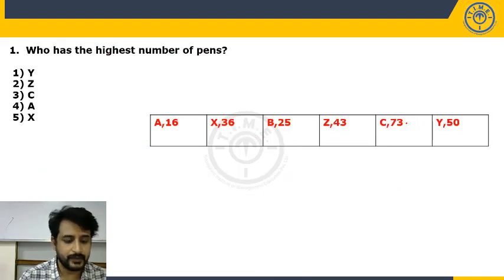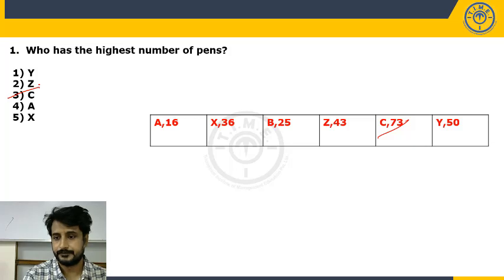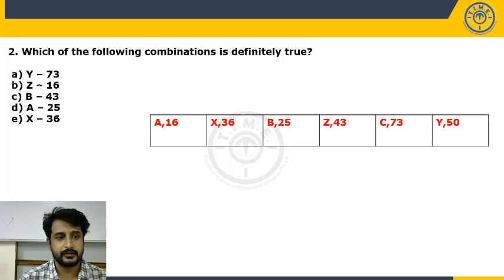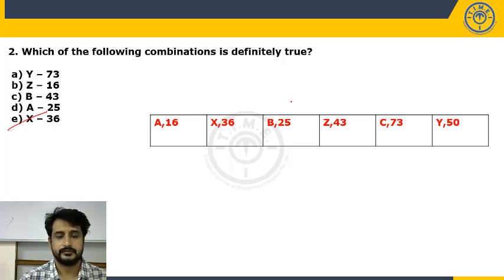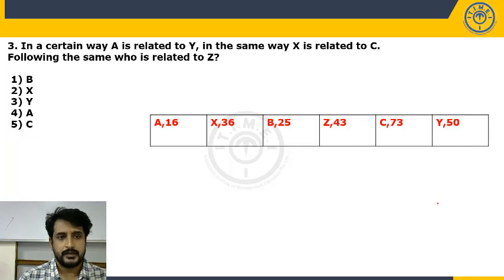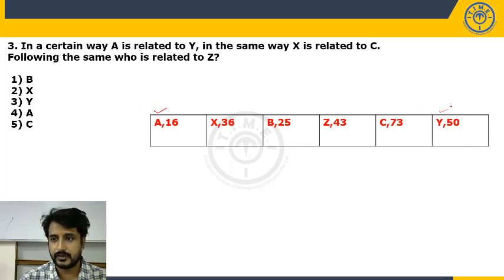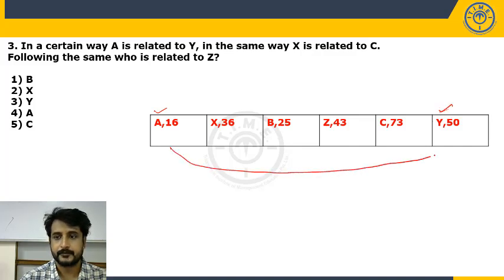Now answering the questions. Question: who has the highest number of pens? C with 73 pens. Question: which combination is definitely true? Y–73? No. G–16? No. B–43? No. A–12? No. X–36? Yes — choice X=36 is correct. For the analogy question: A is related to Y in the same way X is related to C. The relation is corresponding mirror positions — persons to the left of A equals persons to the right of Y. Similarly, persons to the left of X is 1 and persons to the right of C is also 1.